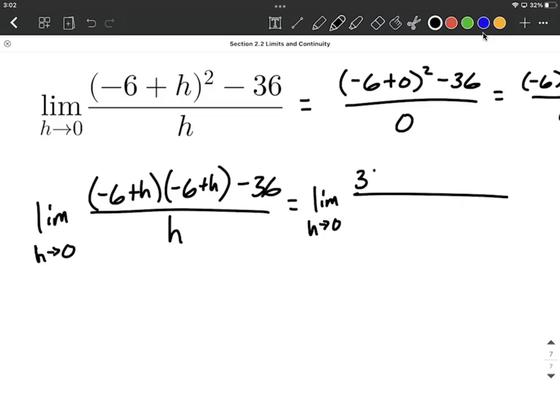Negative 6 times negative 6 is positive 36, plus the outer, negative 6h, inner, negative 6h, and last, h times h makes h squared. Bring along minus 36, and we still have h here.